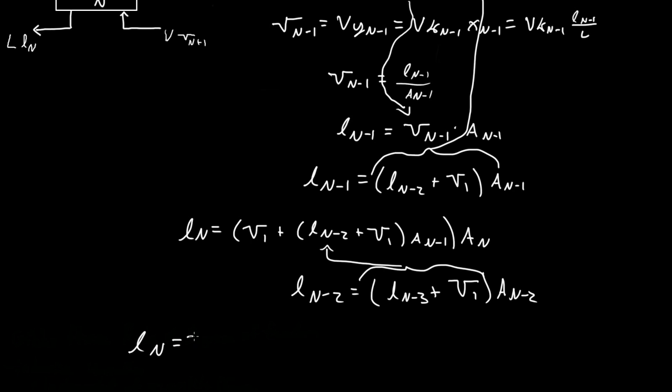So then L_n equals V_1 plus L_{n-3}. So then L_n equals V_1 plus (L_{n-3} plus V_1 times A_{n-2}) plus... making sure I'm doing this right... plus L_{n-1} times A_n.